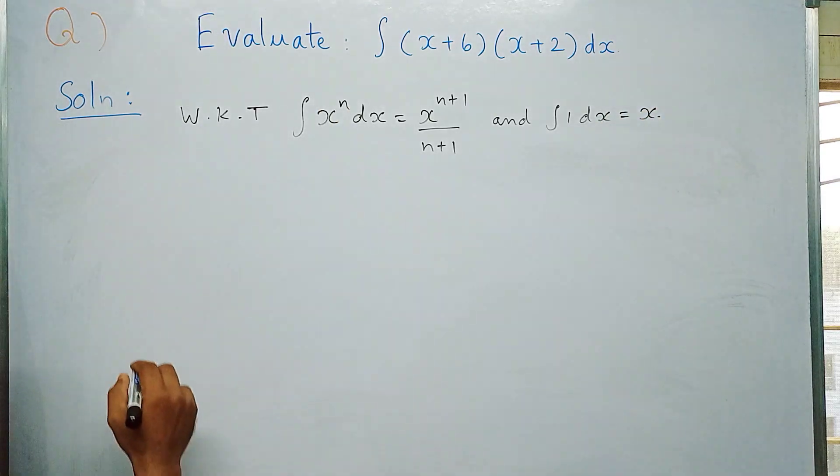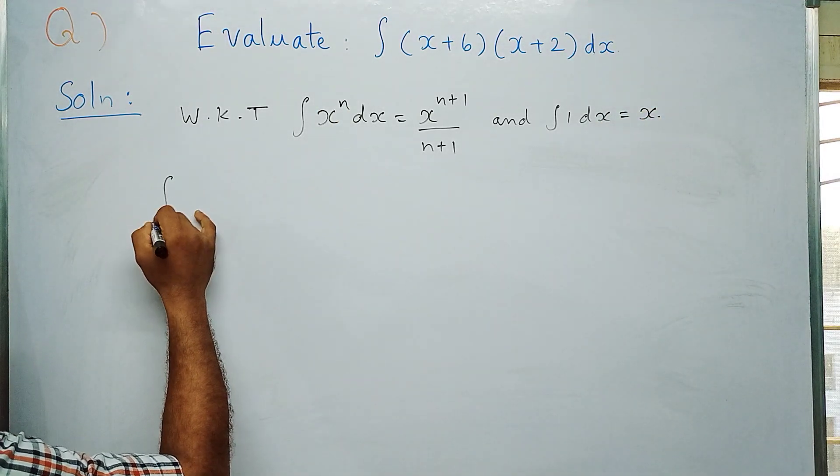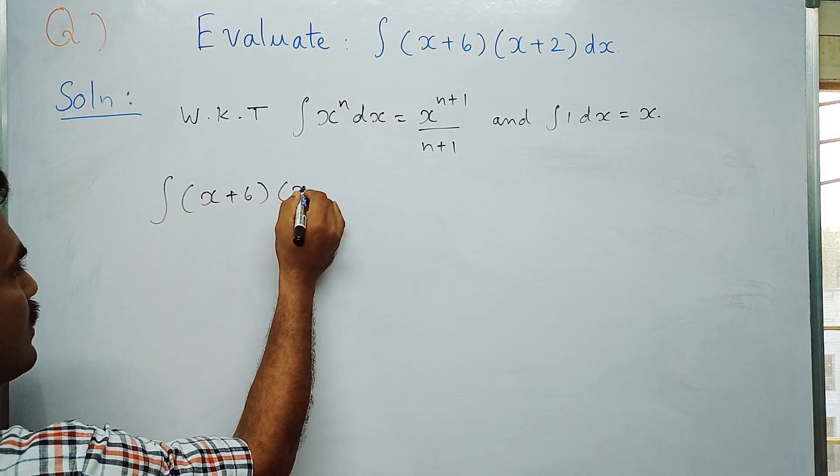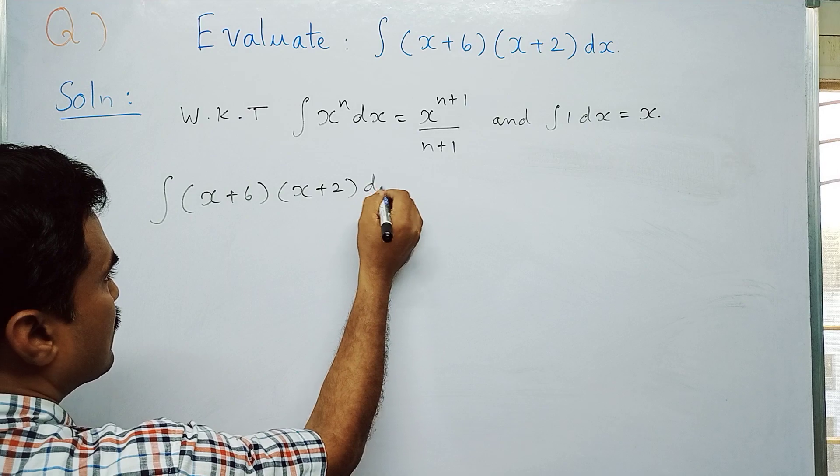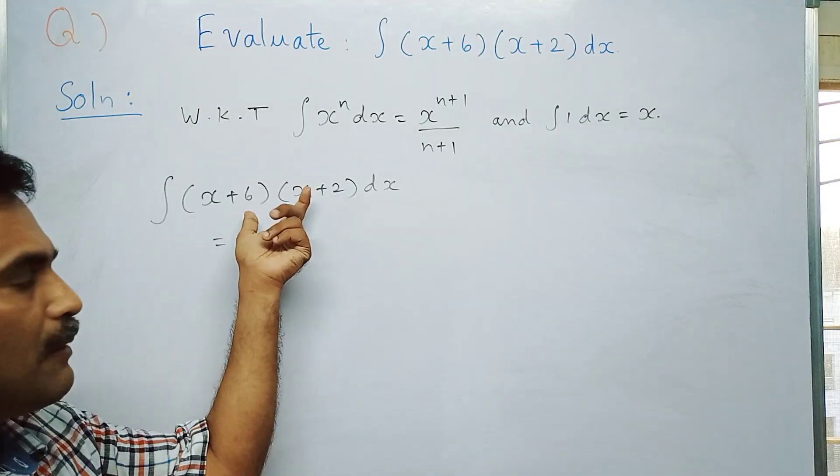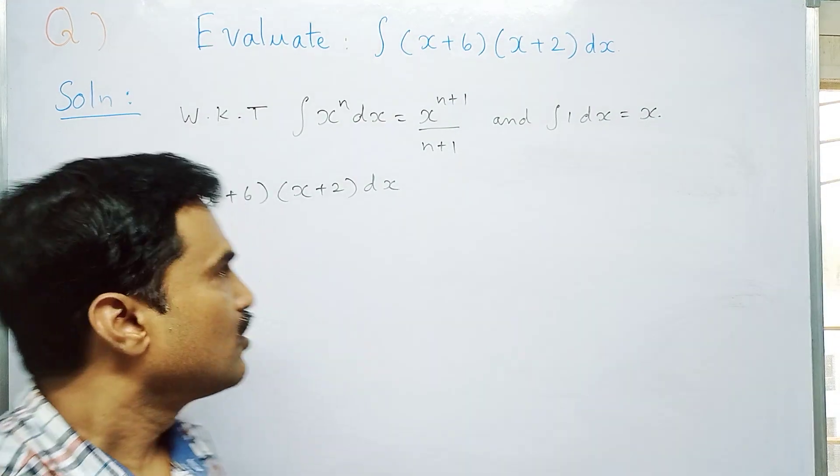Now what is given in the problem: integral (x+6)(x+2)dx. As I told you before, first you need to multiply this integrand.